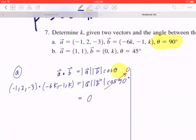On the left hand side, if you work this out, that's (-1) times (-6k), that's going to be positive 6k. 2 times (-1), that is going to give you -2. (-3) times k is going to give you -3k.